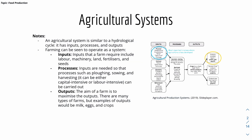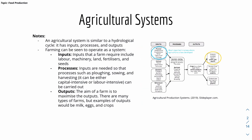We'll first look at agricultural systems. It's similar to the hydrological cycle we saw in the previous few videos in Theme 2, where there's an input, process, and output. Farming is basically like a system where inputs include labor, machinery, land, fertilizer, and seeds — which are basically what a farm needs.